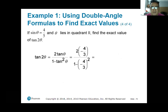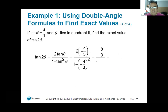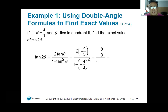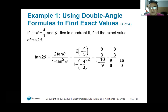Now it's just a matter of simplifying. In the numerator I'm going to have negative 8 over 3. In the denominator, I need to find a common denominator — it's going to be 1 minus 16 over 9. Those two negatives become a positive, but you still have a negative outside the parentheses, so it stays a minus 16 over 9. Common denominator will be nine over nine, then I subtract.